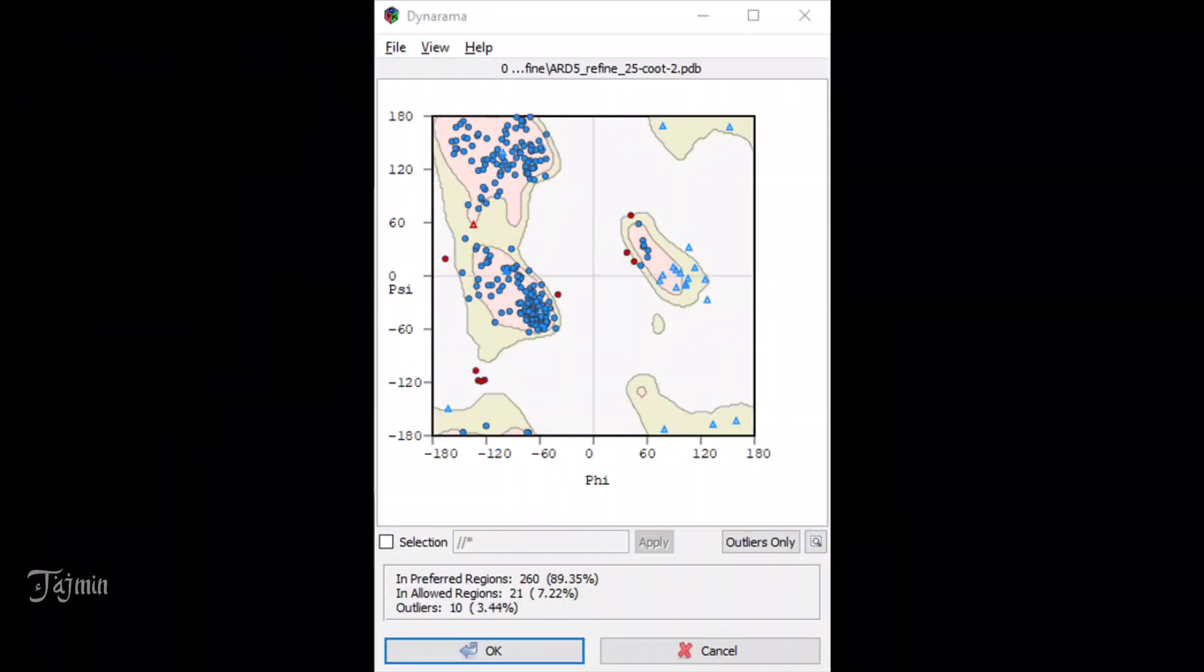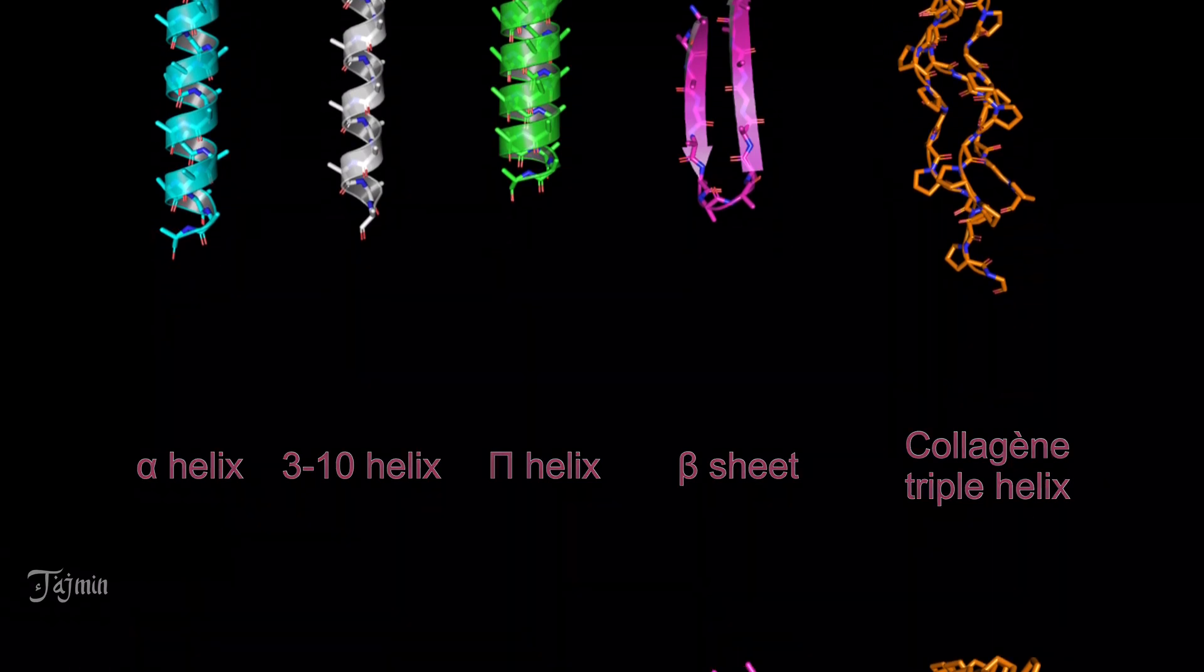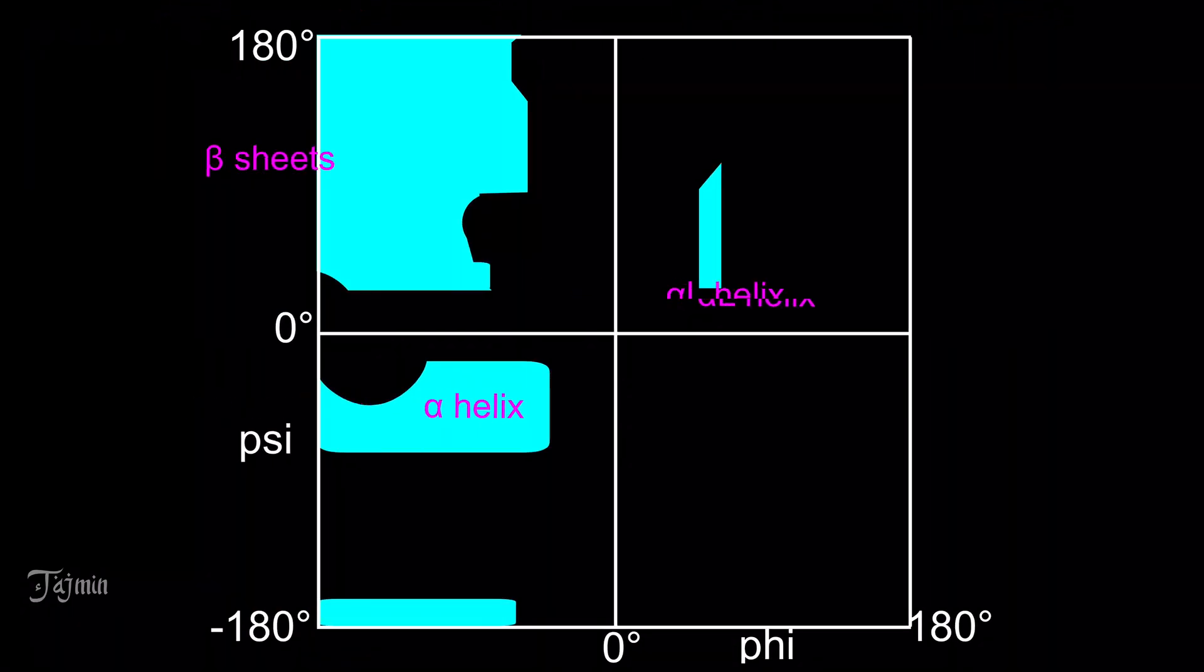To this date, scientists use this plot to validate the protein structures. We will see in the next video what are the different secondary structural elements and what are their allowed torsion angles.